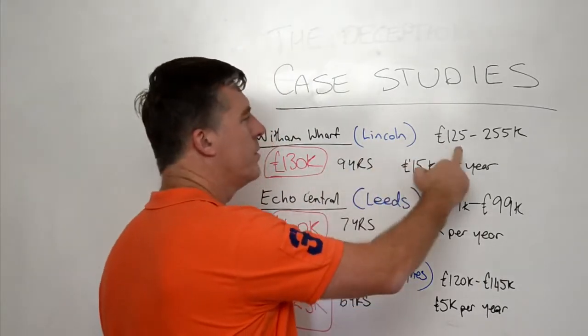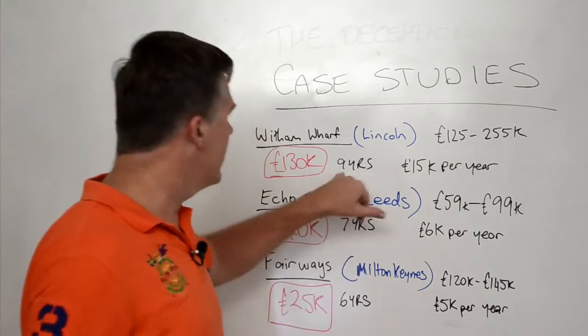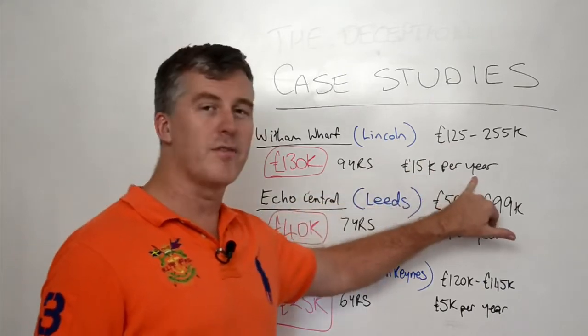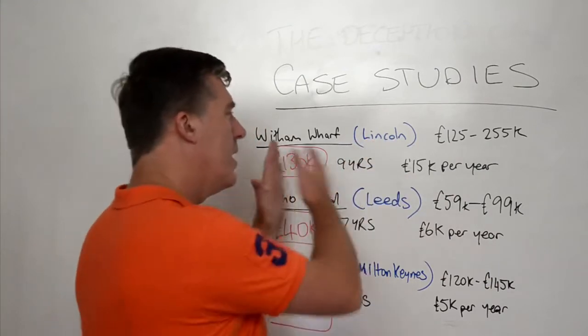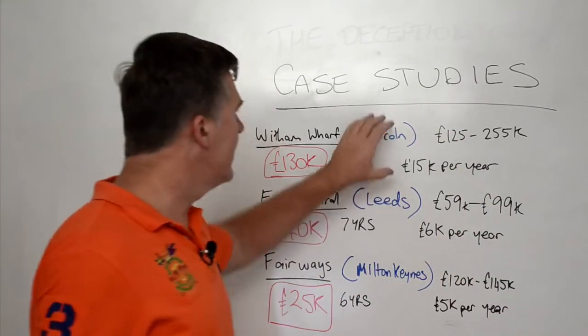So even though it looks like 100% profit, actually consider it over nine years, £15 grand. That's getting much more accurate about what the real return is. And obviously, the property cycle changes, and in this case, Lincoln.